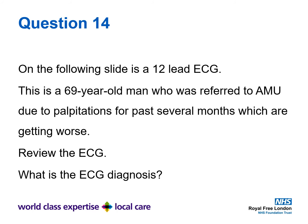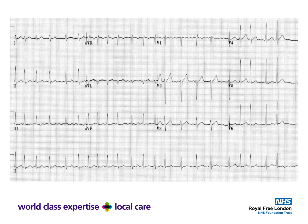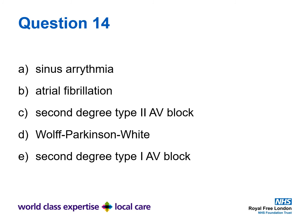Question 14. On the following slide is a 12 lead ECG. This is a 69 year old man who was referred to the acute medicine unit due to palpitations for the past several months, which are getting worse. Review the ECG and decide what the ECG diagnosis is. Pause here until you have an answer. Is the ECG showing A: sinus arrhythmia, B: atrial fibrillation, C: second degree type two AV block, D: Wolff-Parkinson-White syndrome, or E: second degree type one AV block?